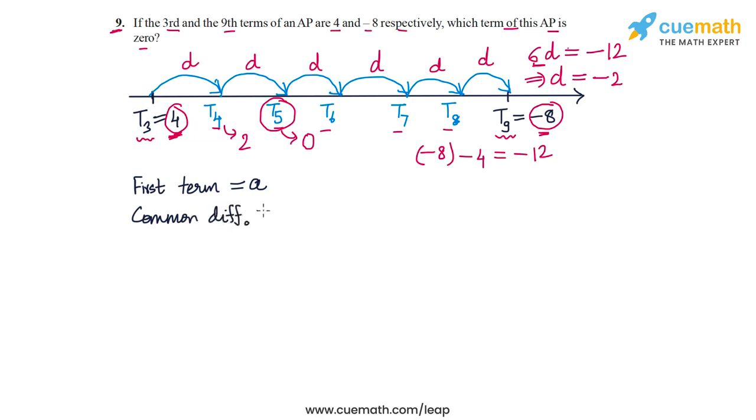We are given that the third term is 4. So T3 equals 4. Let's use the expression for the nth term of an AP. T3 in terms of A and D can be written as A plus (N minus 1)D. Since N is 3, N minus 1 is 2. So A plus 2D equals 4.